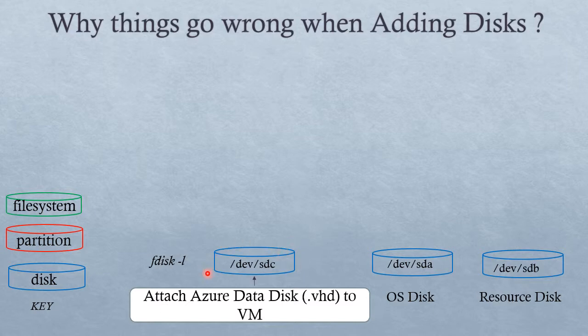fdisk -l will list the existing disks and any new disks. In our example, we have no other data disks apart from the new one we have just attached: /dev/sdc. We do however have sda, which represents the operating system disk, and sdb, which is the temporary or resource disk. Note: permanent data should not be stored on the temporary resource disk.